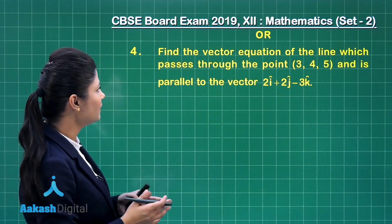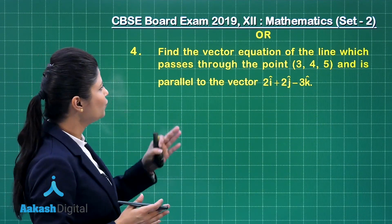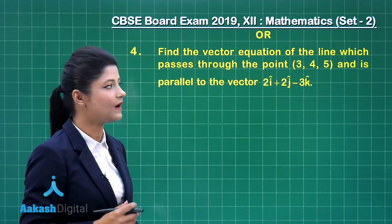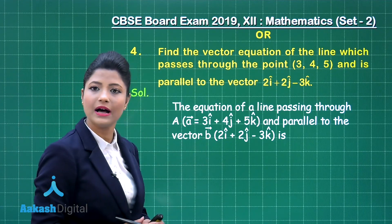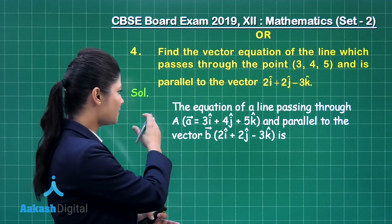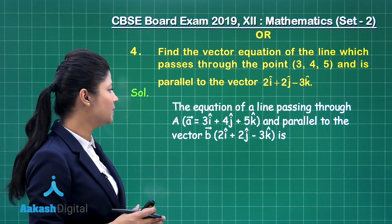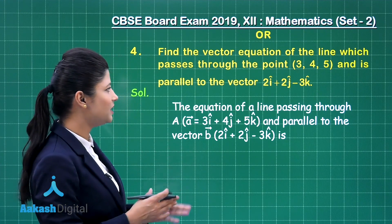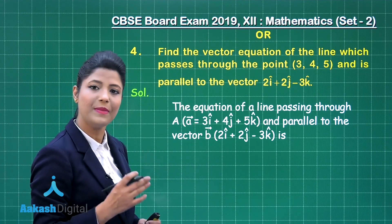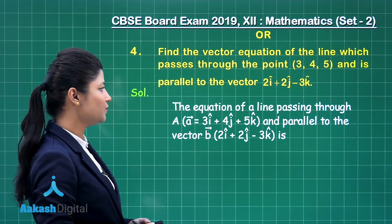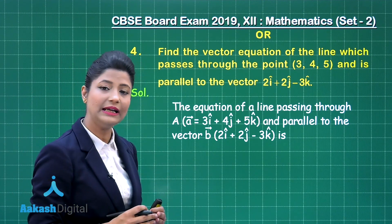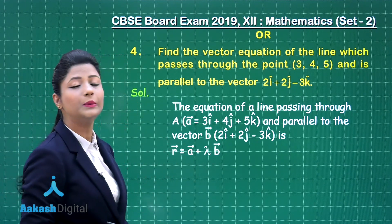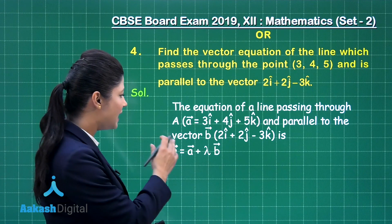Now let us come to the optional part. It states to find the vector equation of the line passing through the point (3, 4, 5). So vector A = 3i-cap + 4j-cap + 5k-cap, and it is parallel to vector B = 2i-cap + 2j-cap − 3k-cap. As you know, if a line passes through a given point and is parallel to a given vector, then it is given by R-vector = A-vector + λ B-vector.